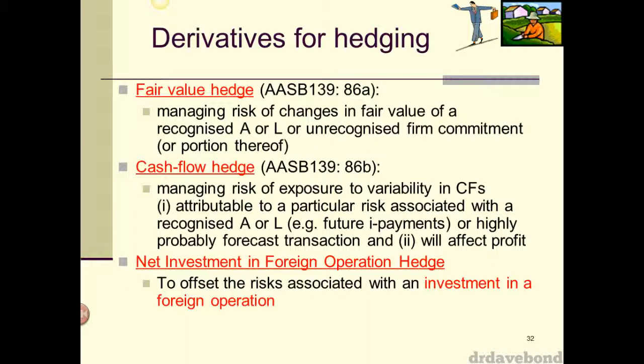Anything before we enter into the transaction is going to be a cash flow hedge; anything after that is a fair value hedge. I don't necessarily have to use a derivative to get that surety — I could just go to HSBC, give them a thousand dollars, buy US dollars right now, put it under my pillow, and I'd know exactly what I got for it regardless of what the Australian dollar does.